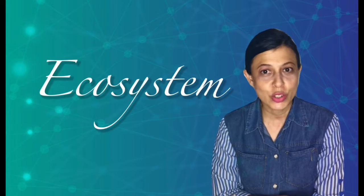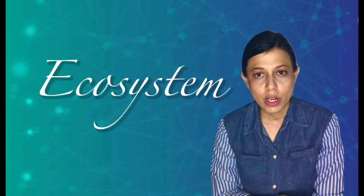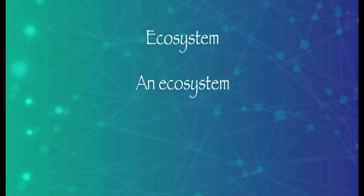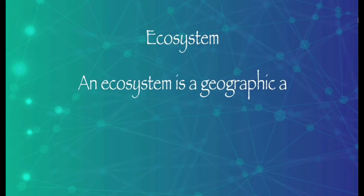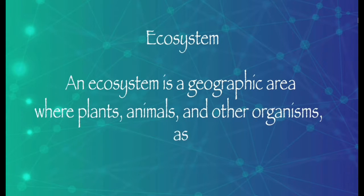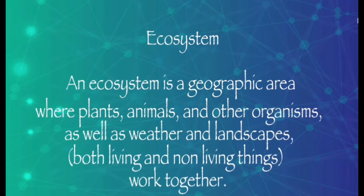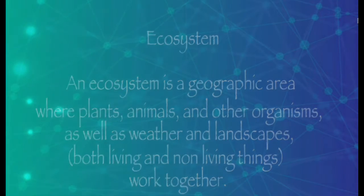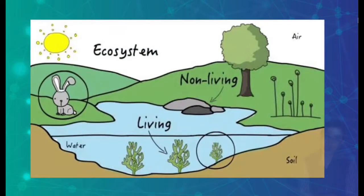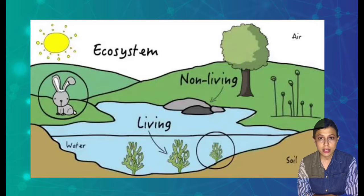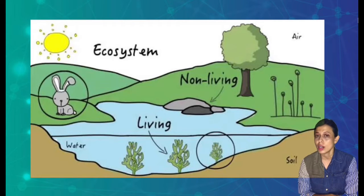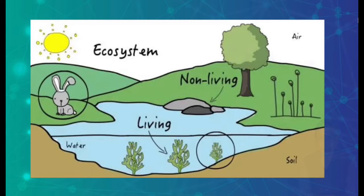Hello everyone, how are you today? Today we are going to discuss about ecosystem. The definition of ecosystem is a geographic area where plants, animals, and other organisms, as well as weather and landscapes — both living and non-living things — work together. An ecosystem is where living things and non-living things interact with each other.